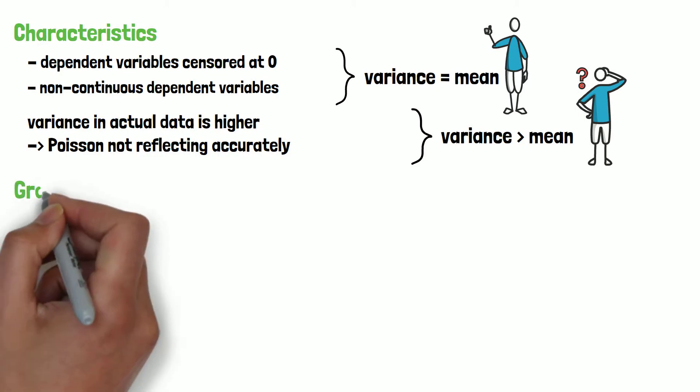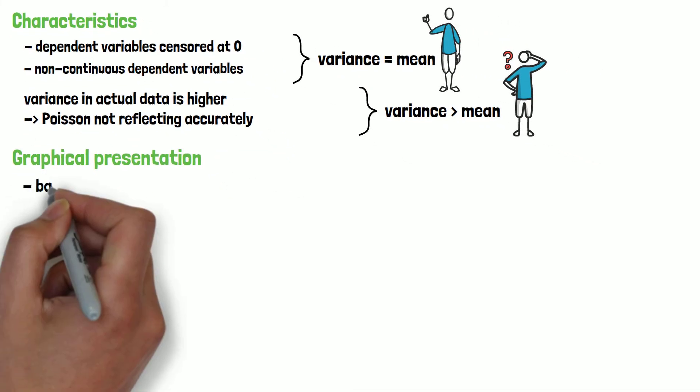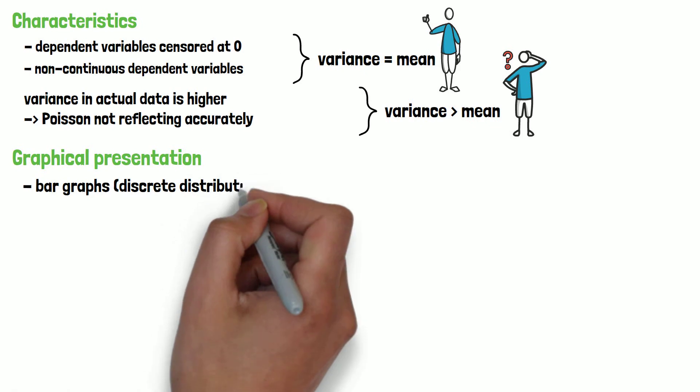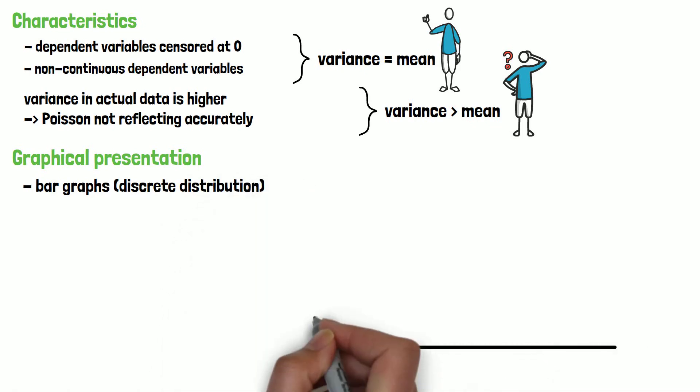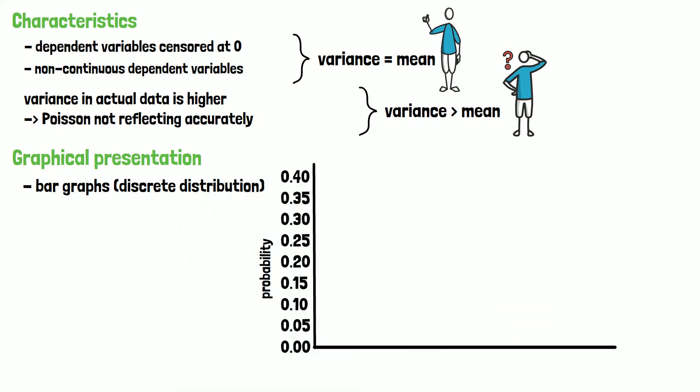For the graphical presentation of the Poisson probability distribution function, only bar graphs are valid, since the distribution is discrete. Joining the values to a complete function is not applicable in discrete definition areas.